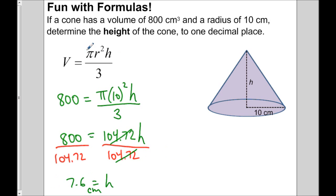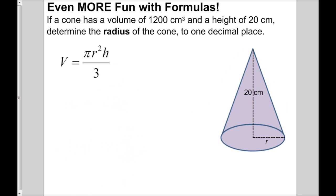This is an example of using a formula and then having to isolate for a variable. Let's do another example. A cone has a volume of 1,200 cubic centimeters and a height of 20 centimeters — determine the radius. We've used this formula to find the height; now we're going to use it to find the radius.